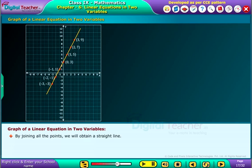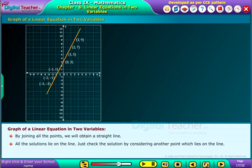By joining all the points, we will obtain a straight line. All the solutions lie on the line. Just check the solution by considering another point which lies on the line.